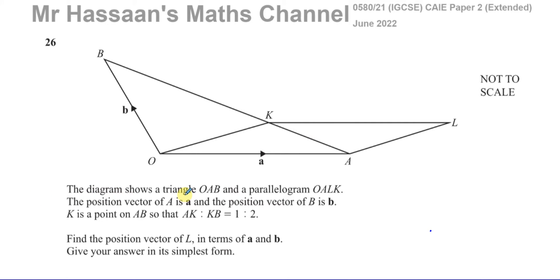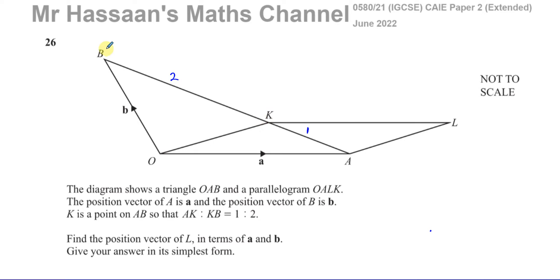The diagram shows a triangle OAB and a parallelogram OALK. The position vector of A is called vector A and the position vector of B is called vector B. The position vector means the vector from O to that point, so O to A is A and O to B is B. K is a point on AB such that the ratio AK to KB is 1 to 2 — so this line is twice the length of that line.